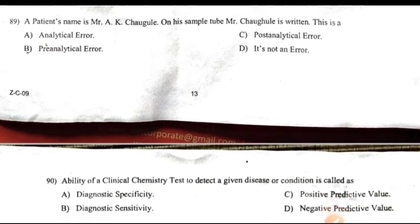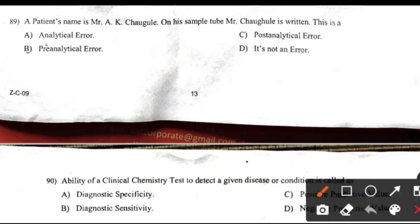A patient's name is Mr. A.K. Cengule and on his sample tube it reads Mr. Cengule. This is a: Right answer — Pre-analytic error.